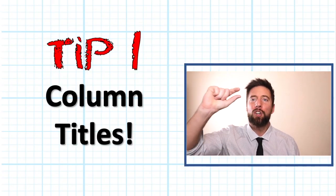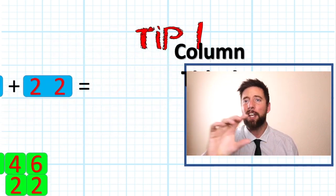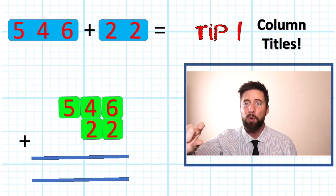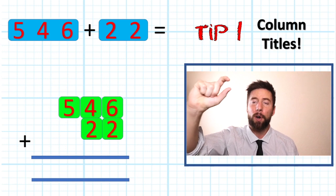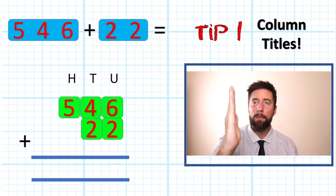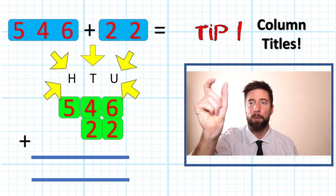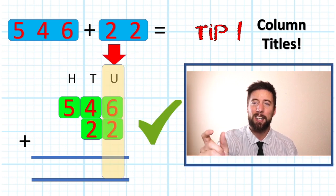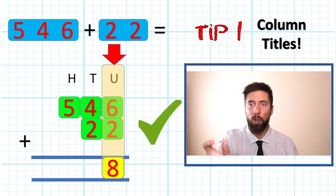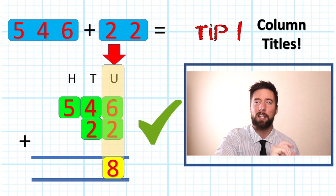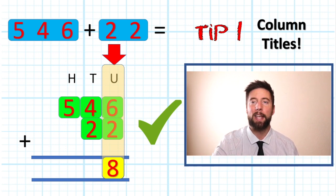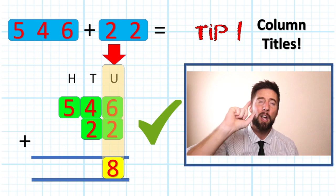Okay, tip number one, your column titles. Don't just settle for putting your numbers and your equals lines across. Put your column titles in, it will keep things in the correct columns. When you're adding up your units, you have to put your unit's answer in the right column and it's all nice and neatly presented for you. It will avoid making small mistakes. Tip number one, column titles.